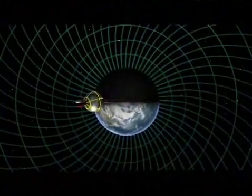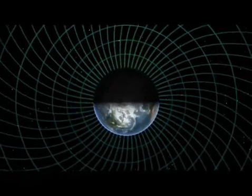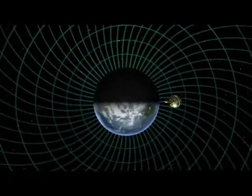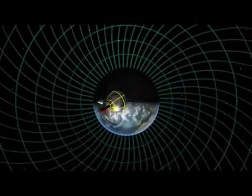Like a straw floating on the surface of a river, where the river flows faster near the center and slower near the bank, the straw will turn. It's precisely the same thing going on here. Space moves faster near the Earth and slower farther away, and the spin axis of the gyroscope turns.